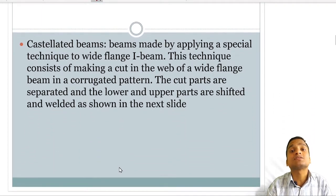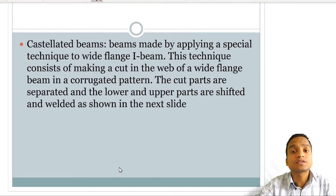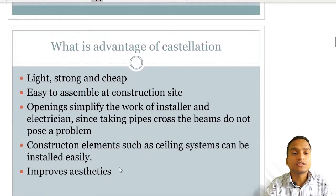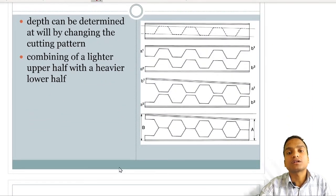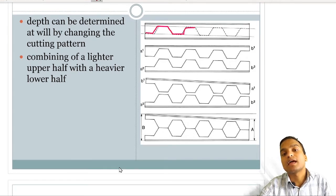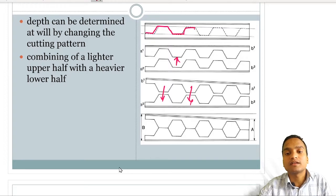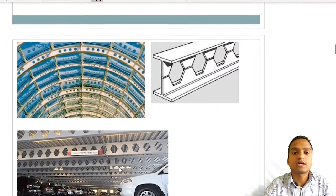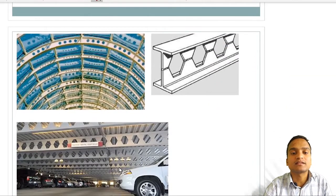Castellated beams have corrugations provided in the web portion. The web of a wide flange beam is cut in a corrugated pattern, the cut parts are separated, shifted, and welded together. This is how they are produced industrially — first the web portion is cut, then rearranged and welded, resulting in the castellated beam. They look aesthetically pleasing and are also enhanced in strength.